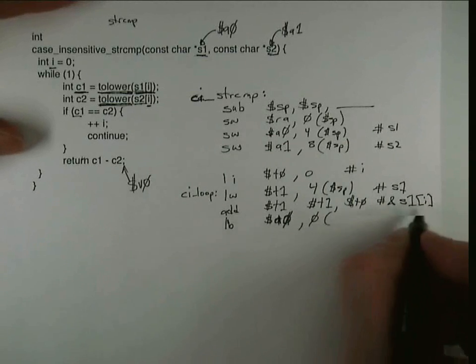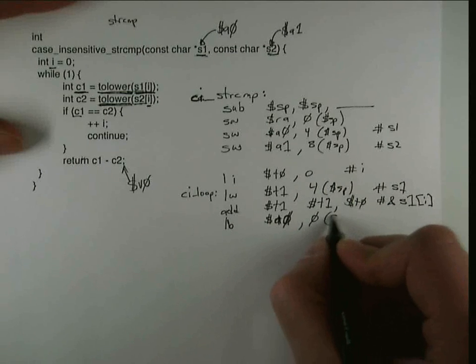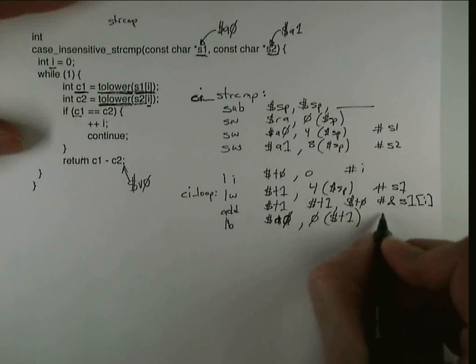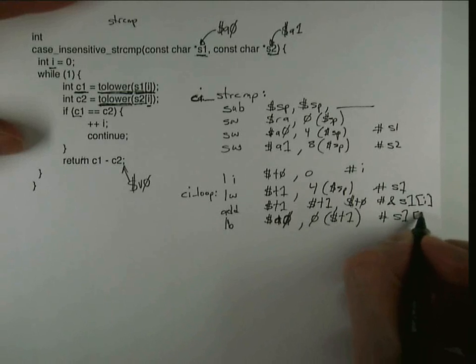So I've got the address, and to read the character, I need to do a load byte using that address.